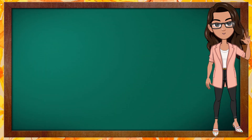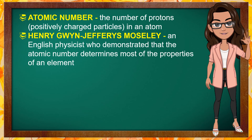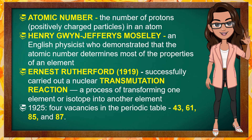Let's sum up our learnings today. The atomic number is the number of protons — positively charged particles — in an atom. Henry Gwynne Jeffries Moseley was an English physicist who demonstrated that the atomic number, or the number of protons in an atom, determines most of the properties of an element. In 1919, Ernest Rutherford successfully carried out a nuclear transmutation reaction — the process of transforming one element or isotope into another. In 1925, there were four vacancies in the periodic table corresponding to atomic numbers 43, 61, 85, and 87. Elements with atomic numbers 43 and 85 were synthesized using particle accelerators.